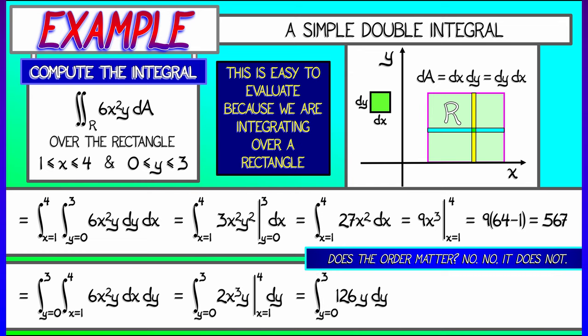Now we integrate 126y with respect to y. That yields 63y². Evaluating as y goes from 0 to 3 gives us 9 times 63, which is again 567. The order does not matter.